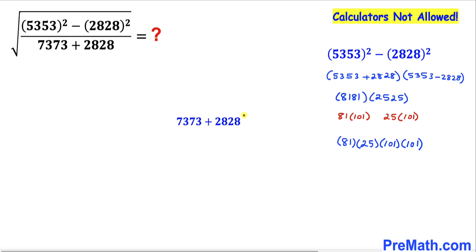Let's go ahead and manipulate this thing. 7373 could be written as 73 times 101. Likewise, this 2828 could be written as 28 times 101. Therefore, we are going to write 73 times 101 plus 28 times 101.